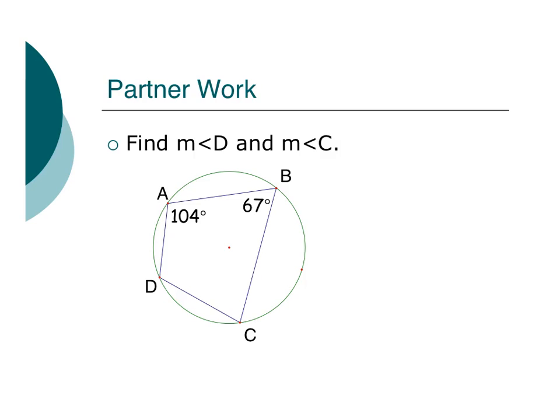Here's a fun problem. We're given two angles of this inscribed quadrilateral, and we're asked to find the other two missing angles. If I look at this, I know that the arc across from 67 degrees, that inscribed angle, is double 67.